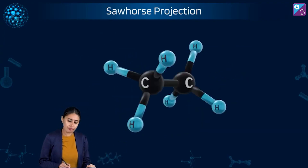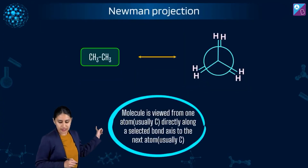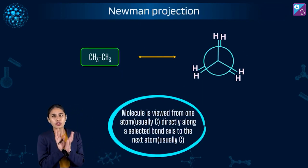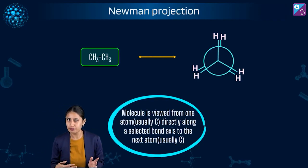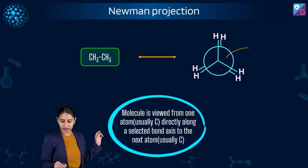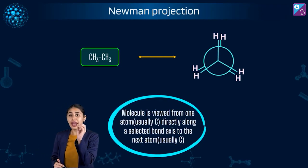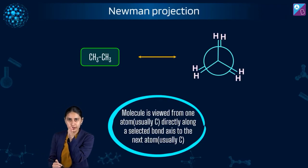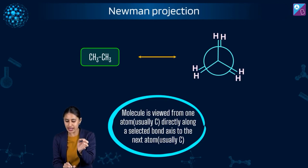Now let's look at Newman projection. In sawhorse, you can see these slant lines. In Newman, it's like a moon — you can see a circular shape. Here, we view the molecule at the carbon-carbon bond head-on, like from the front. The molecule is viewed from one atom, usually carbon, directly along a selected bond axis to the next atom.